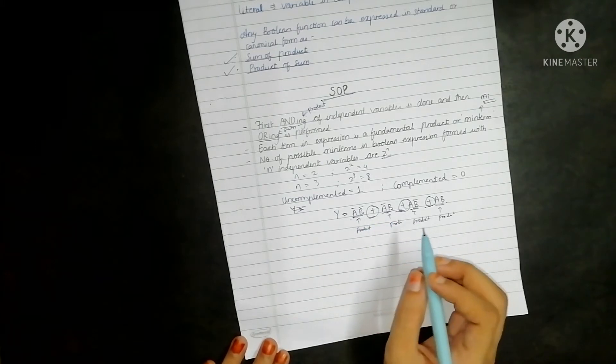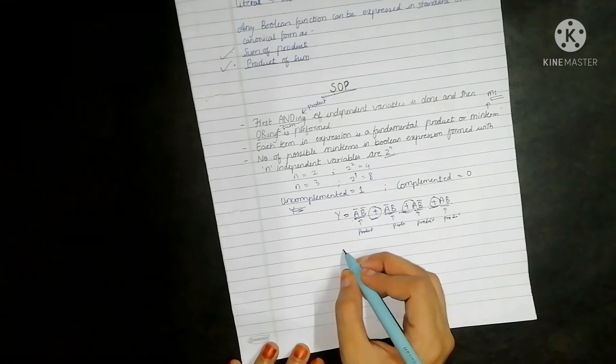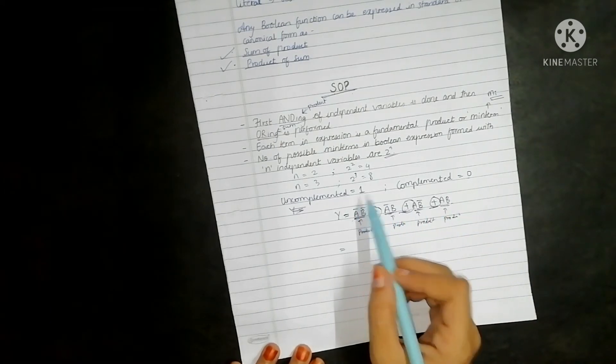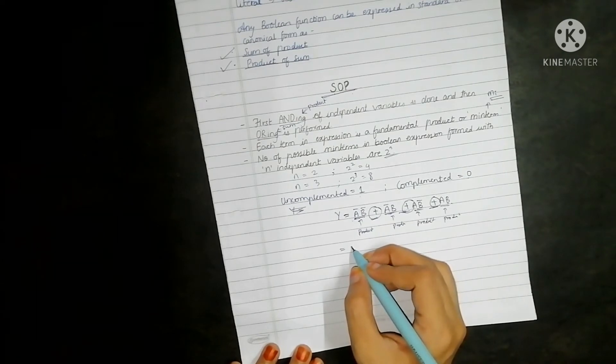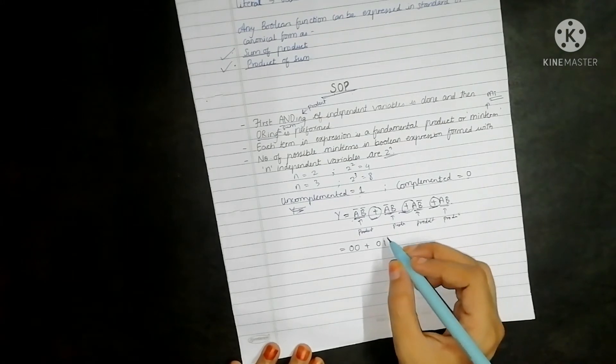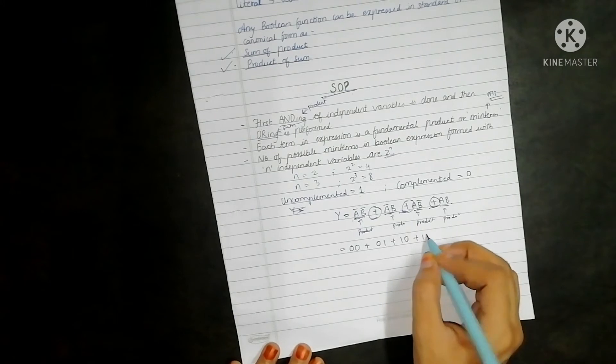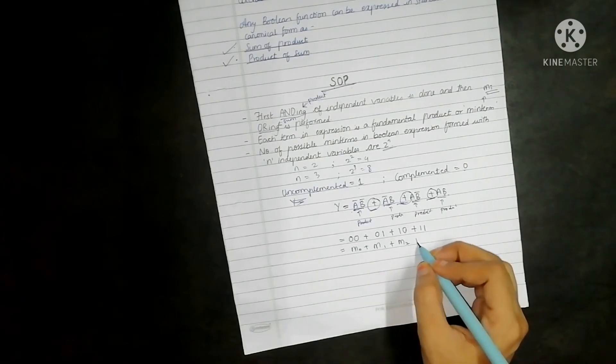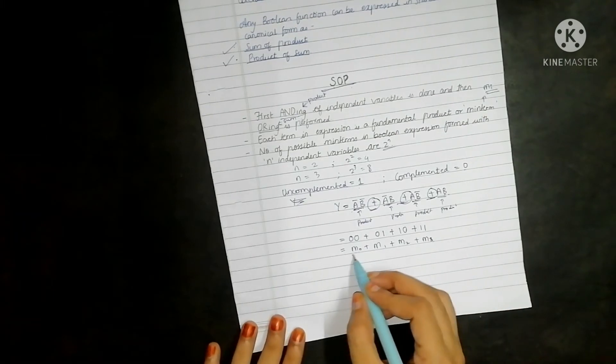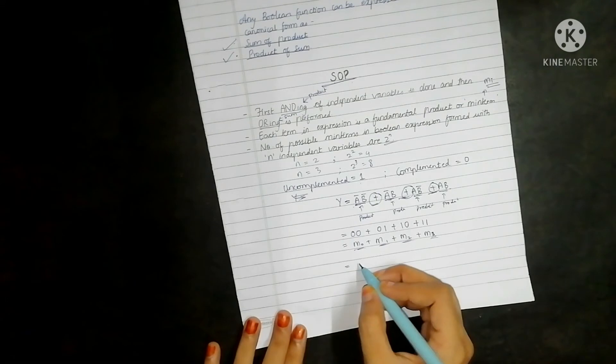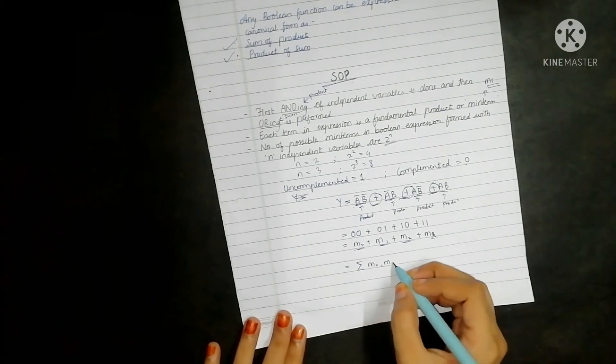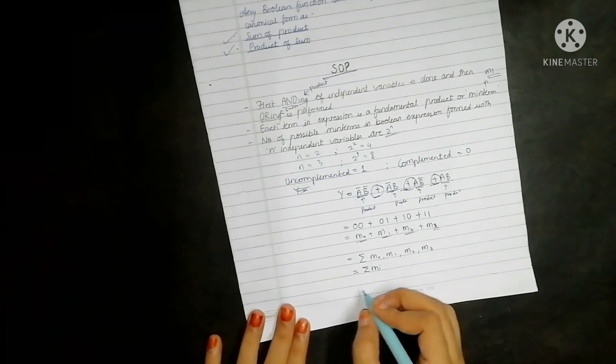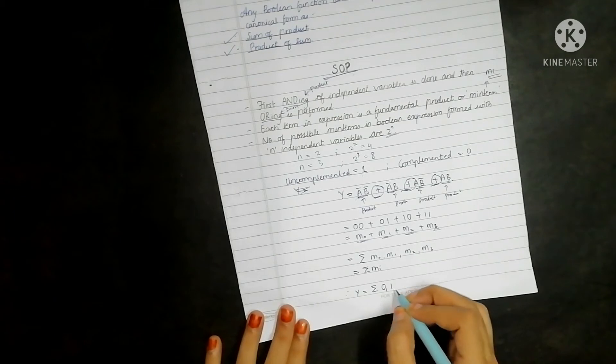In this way you can recognize the equation whether it is of SOP form or POS form. We said for complemented we have the value 0 and for uncomplemented we have the value 1. Go to the truth table and write down the values. So 0 0, then 0 1, then 1 0, and 1 1. We know 0 0 is m0, 0 1 is m1, 1 0 is m2, and 1 1 is m3. This can also be represented as sum of mi, or you can write y to be equal to sum of 0, 1, 2, and 3.